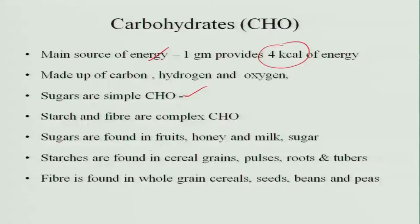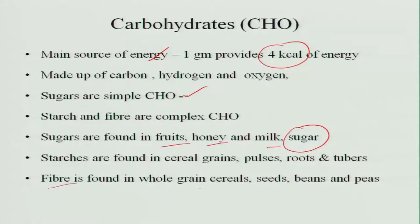Sugars are found in fruit, honey, milk and the sugar we eat. Starches are found in cereal grains, pulses, roots and tubers, and fiber is found in whole grain cereals, seeds, beans and peas.